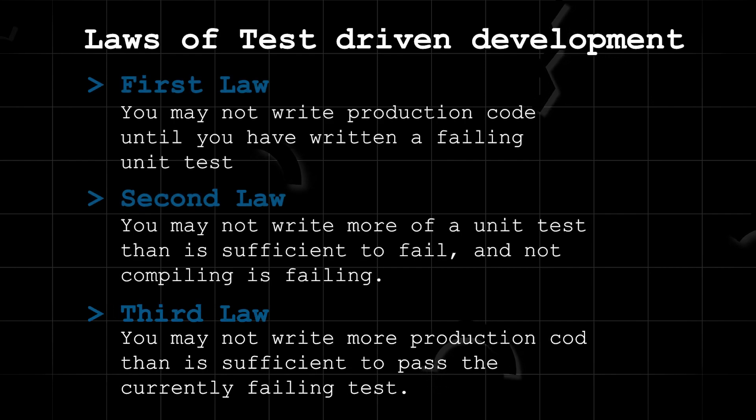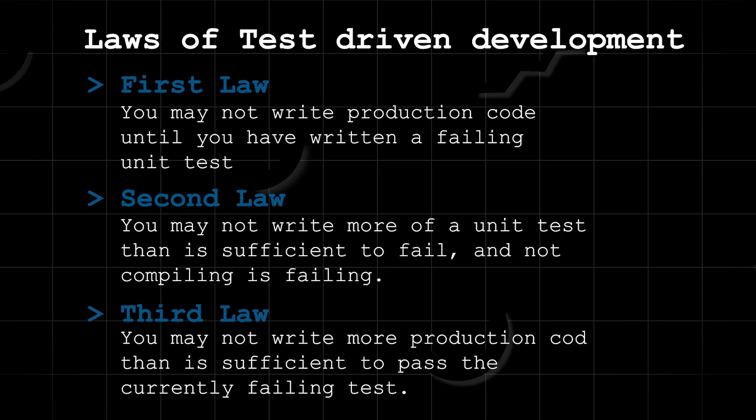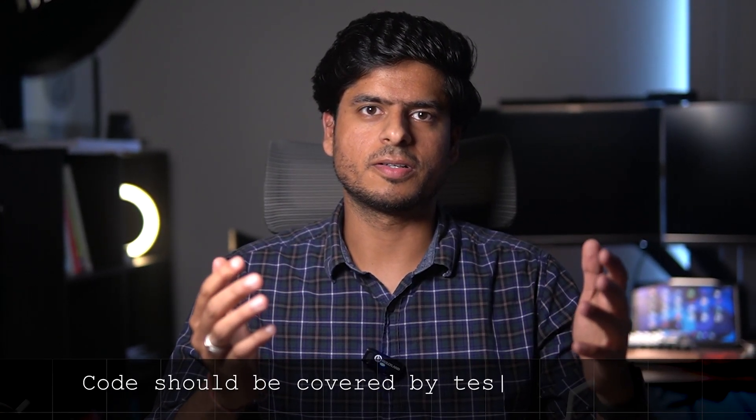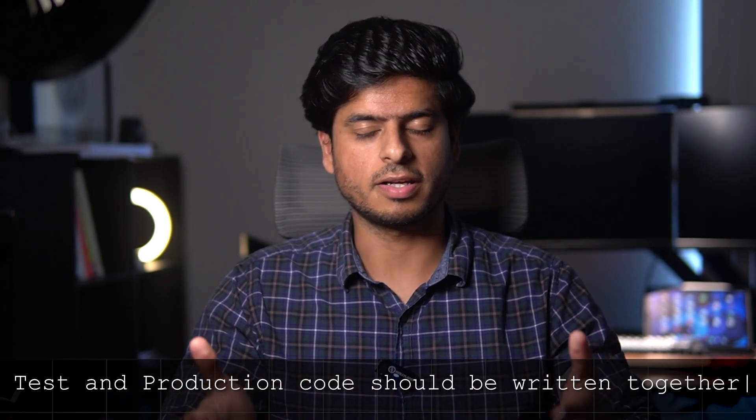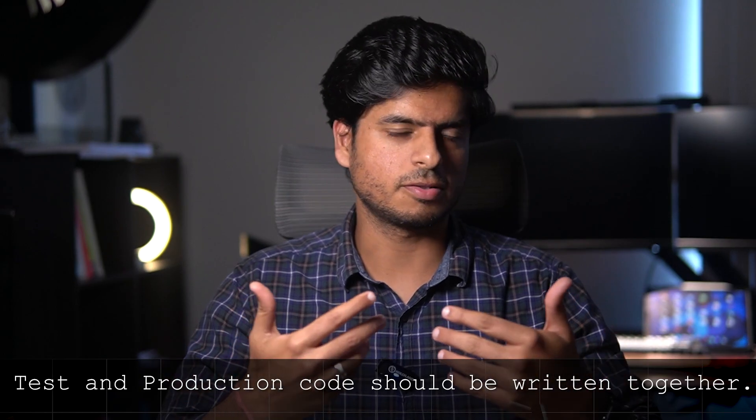The third law says you may not write more production code than is sufficient to pass the currently failing test. This law tells us not to get ahead of the unit tests — we should not add code which is not already tested. The gist is that your code should be covered by tests at any given time, and tests and production code should be written together, all the time.